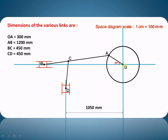Now we will take a suitable space diagram scale of 1 centimeter = 100 mm, so OA will be 3 cm, AB will be 12 cm, BC will be 4.5 cm, CD will be 4.5 cm, and this particular distance will be 10.5 cm. First we will draw the crank circle, making the crank at an angle of 30 degrees. From A we draw an arc of AB, then from B we draw distance BC, and from C we draw an arc at a distance of 10.5 cm.